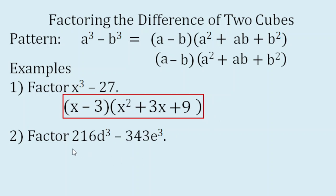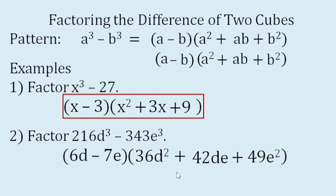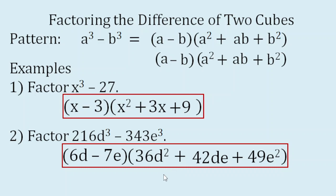For the second example, the cube root of 216D cubed is 6D, and the cube root of negative 343E cubed is negative 7E, so the binomial factor is 6D minus 7E. For the trinomial factor: 6D times 6D is 36D squared. Because this is a minus sign, it will be followed by a plus sign. Multiply 6D times 7E — that's 42DE. Then the last term: negative 7E times negative 7E gives us plus 49E squared. So these are the factors: the quantity 6D minus 7E times the quantity 36D squared plus 42DE plus 49E squared.